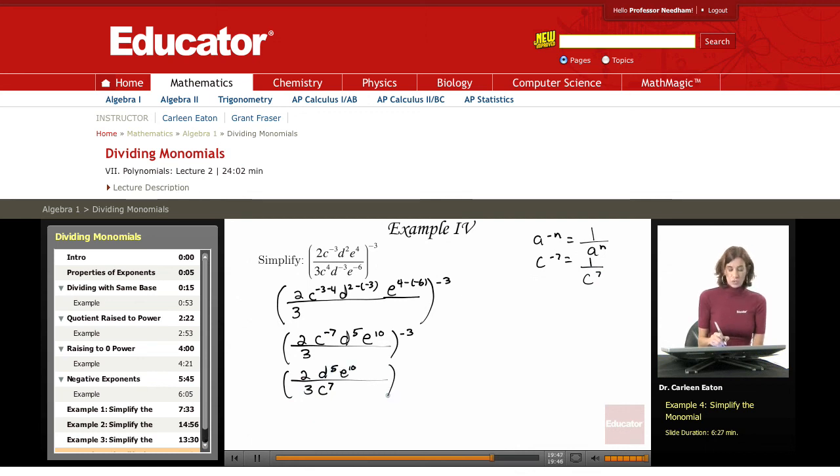Now I'm ready to work with this negative three. My rule about powers raised to powers, a quotient raised to power, tells me that I have A to the M over B to the M. So I'm going to apply this negative three to both the numerator and the denominator.